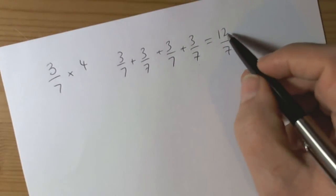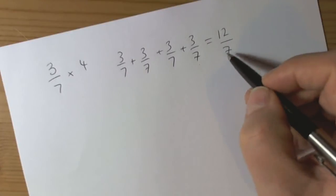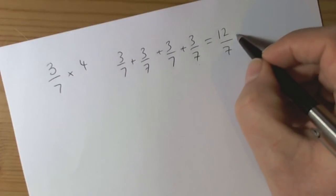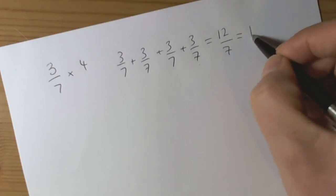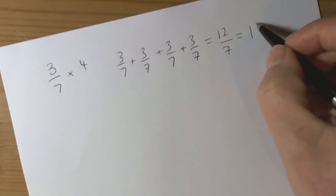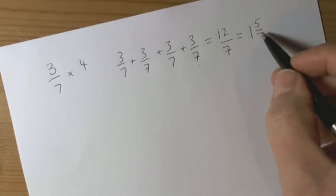And then always with improper fractions where the numerator is bigger than the denominator, we have to cancel down to a mixed number. How many sevenths are going to 12? Well, 1. 12 take away 7 is 5. So there's 5 sevenths left over. We're dealing with sevenths, so our answer will be in sevenths.